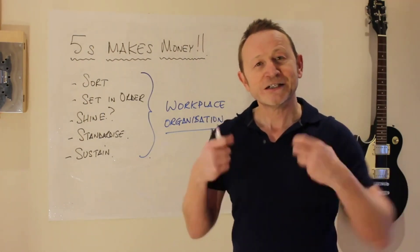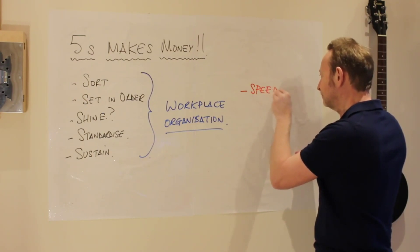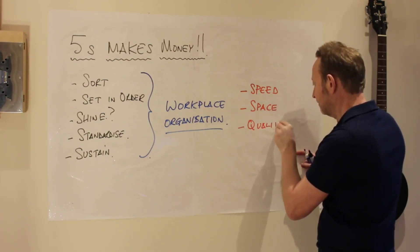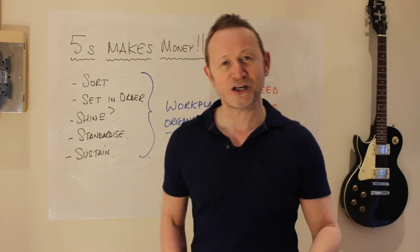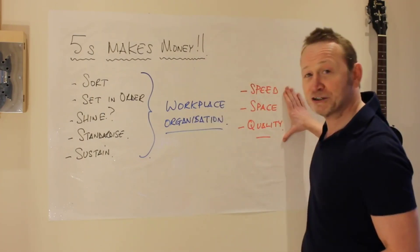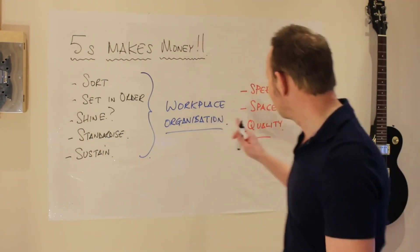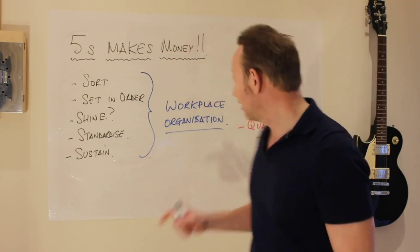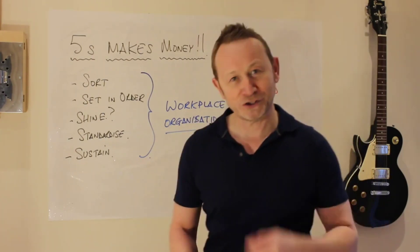With workplace organization, I'm focused on three things: speed, space, and quality. When you set out on a 5S event — I wouldn't call it a 5S event, I'd call it a workplace organization event, a kaizen event — you should have either one, two, or all three of these things in mind. Tell your work teams what you're trying to achieve and let them change their workspace in order to work faster, work in less space, make more money out of the same footprint, or get quality right so they do the job right first time.